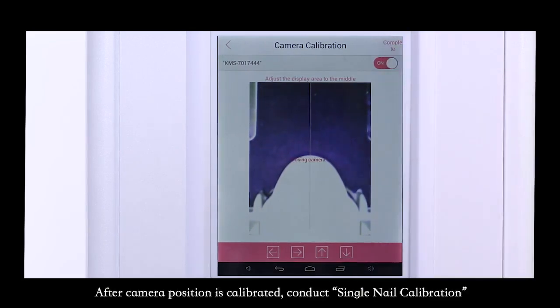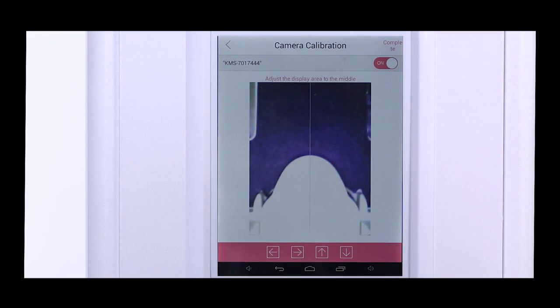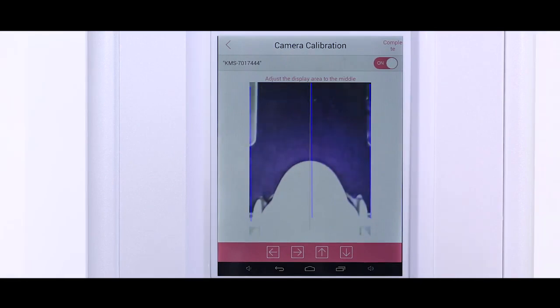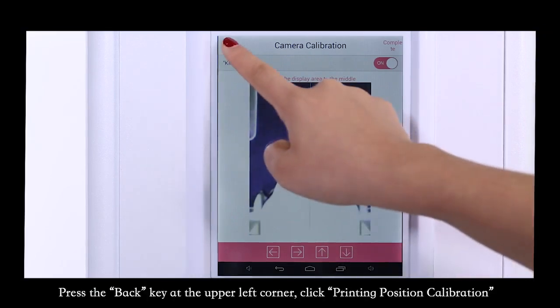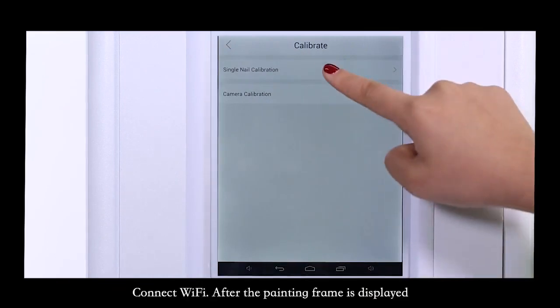After camera position is calibrated, conduct printing position calibration. Press the back key at the upper left corner. Click printing position calibration. Connect Wi-Fi.